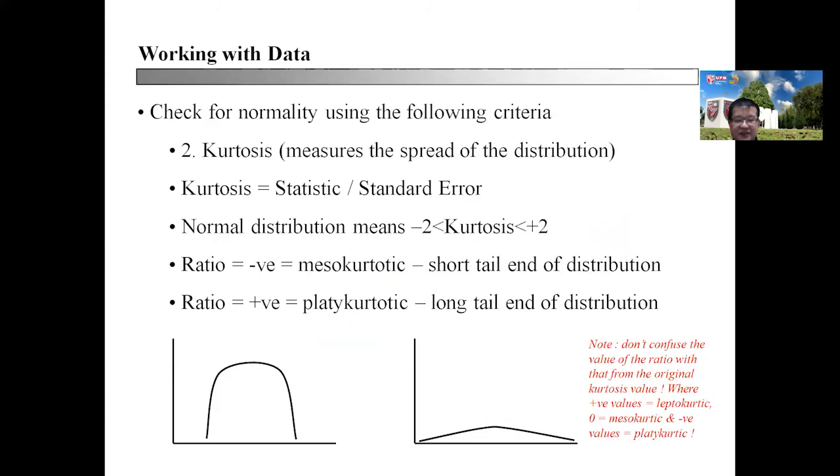What does kurtosis tell you? Kurtosis measures the spread of distribution, which is again given by statistics divided by standard error in your SPSS table. Normal distribution is between minus 2 to plus 2.